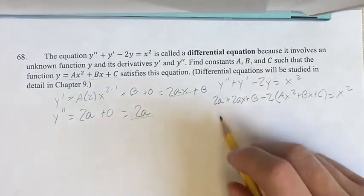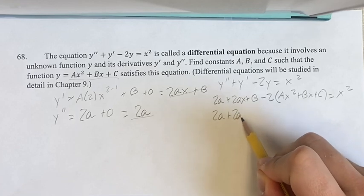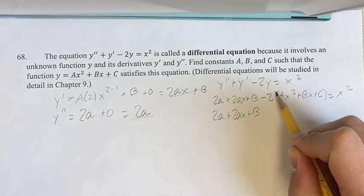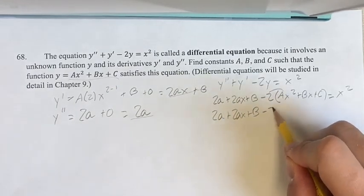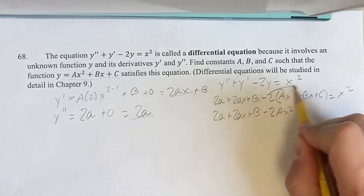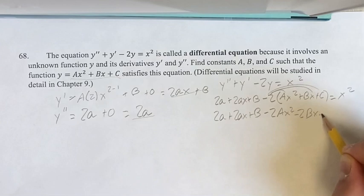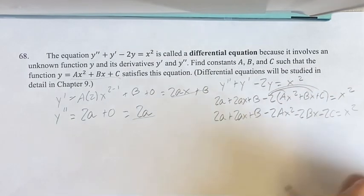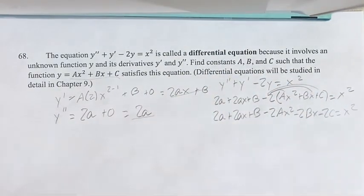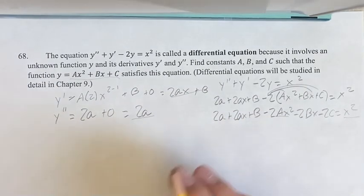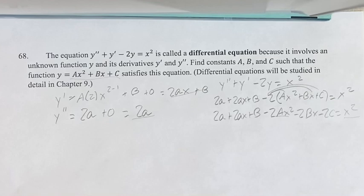Simplifying this out, we have 2a plus 2ax plus b, distributing minus 2ax squared minus 2bx minus 2c equals x squared. And for this to be true, negative 2ax squared has to be equal to x squared. If both of these are going to be equal, then the x squared terms have to be equal.